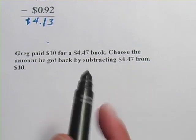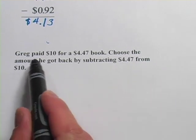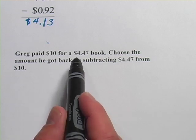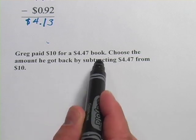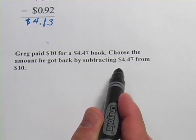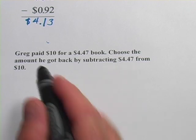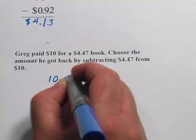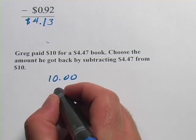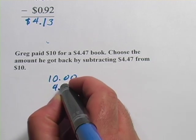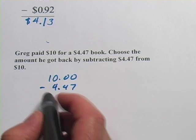And then we've got one more here, and this is a word problem. It says, Greg paid $10 for a $4.47 book. Choose the amount he got back by subtracting 4.47 from 10. So we'll do that, $10, and then I just have to make sure the decimal points are lined up, so 4.47, and that's subtraction.